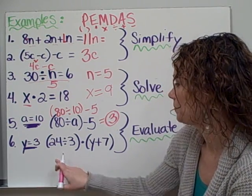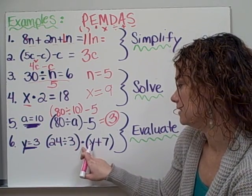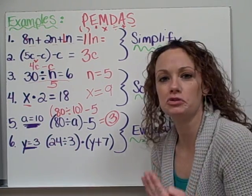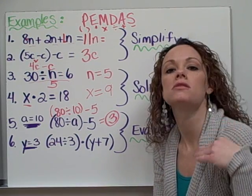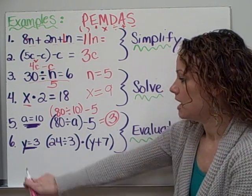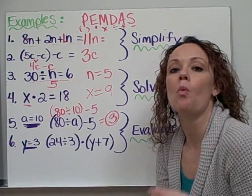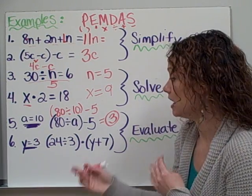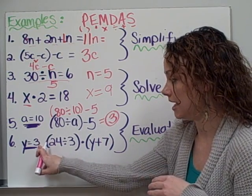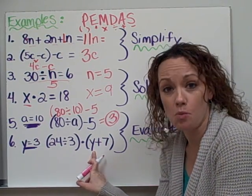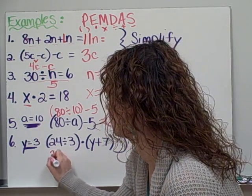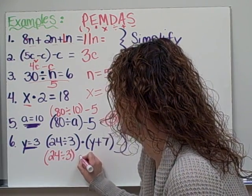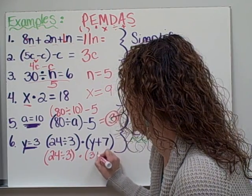Let's try the next one. 24 divided by 3 times y plus 7. Now it may look a little tricky, but all you need to do is break it down slowly, step by step. Now this problem tells us what y is equal to. It says y is equal to 3. So I'm going to go ahead and rewrite the problem and plug in the number 3 wherever my y is. 24 divided by 3, in parentheses, times 3 plus 7.